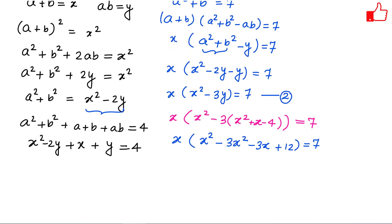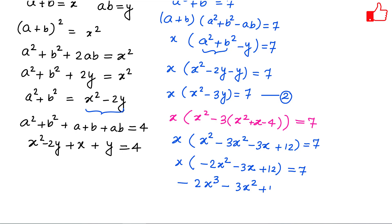Simplifying further: x(−2x²−3x+12)=7. Expanding: −2x³−3x²+12x=7. Moving 7 to the left and multiplying through by −1 gives the cubic equation 2x³+3x²−12x+7=0.